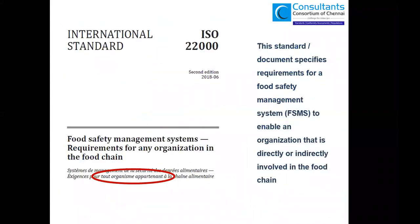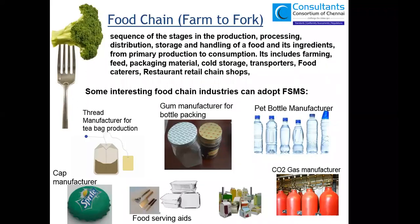Coming to ISO 22000, I want to emphasize the specific word: Food Chain. Food Safety Management System ISO 22000 covers the requirements for any organization in the food chain. It is a basic requirement to understand what industries can go for ISO 22000. They use the simple language 'farm to fork' — from farming level to the consumer level. When an organization falls anywhere on the farm-to-fork chain, they may go for this certification, ISO 22000:2018.